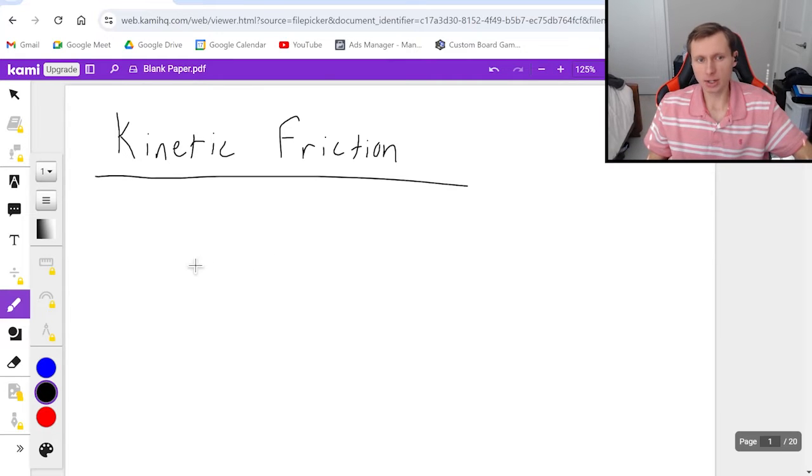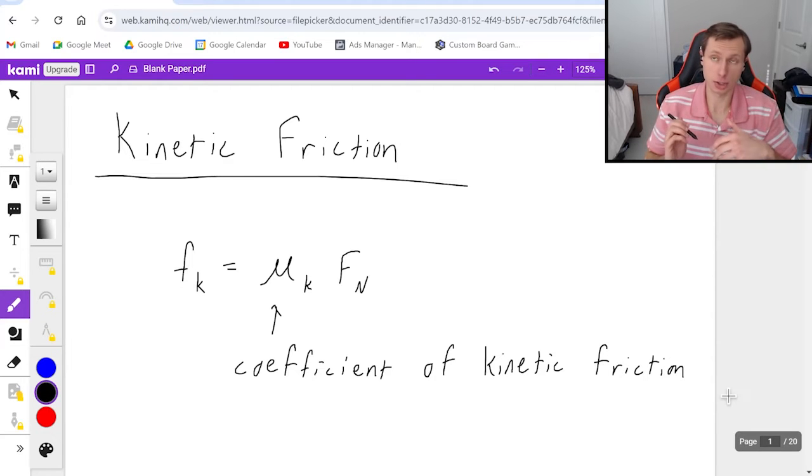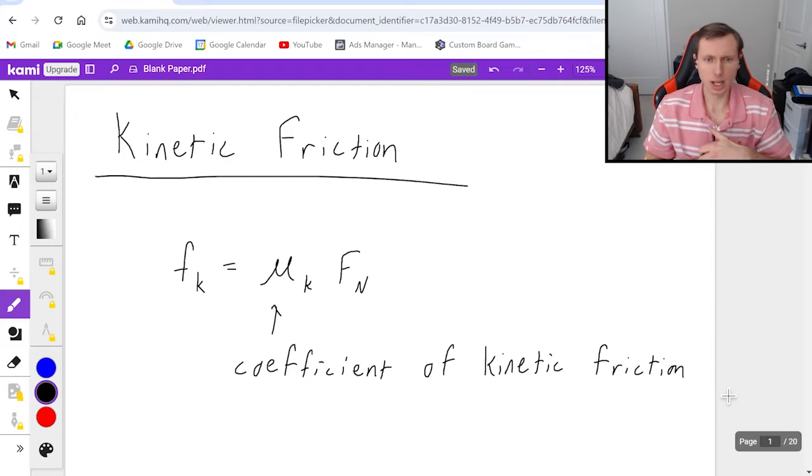So just as a quick reminder, we talked about the equation for kinetic friction in the last video, and that is f_k equals mu_k times the normal force, where mu_k is the coefficient of kinetic friction, and it basically describes how rough or how smooth the surface is. A higher coefficient of friction means the surface is rougher, like sandpaper, and a low coefficient of friction means that the surface is very slippery, like ice.